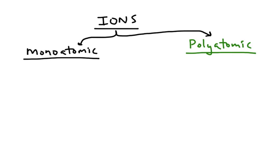Ions are any charged particle that we deal with in chemistry, and we can classify them falling under two main categories: monoatomic ions and polyatomic.